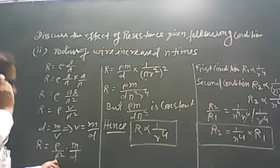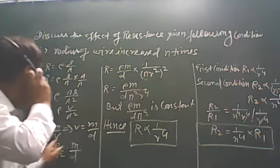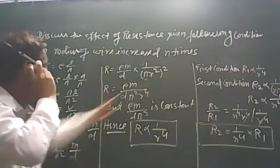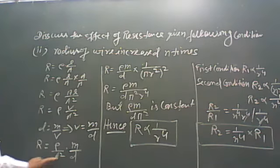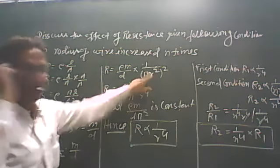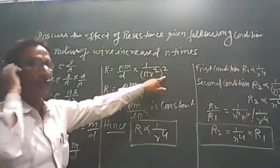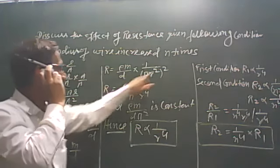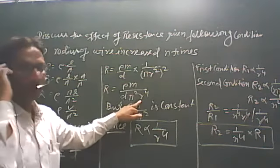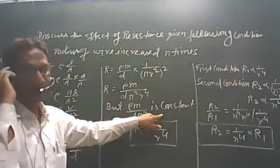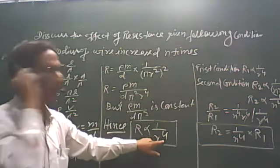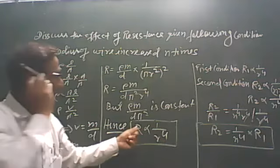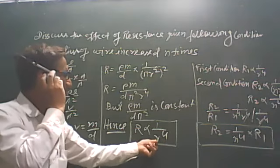We can put the value of a equal to pi r square: rho m upon d, and we can put the value a equal to pi r square squared, because the area is squared. So we get rho m upon d pi r square. Rho m upon d pi is constant, so R is inversely proportional to 1 upon r to the power 4.